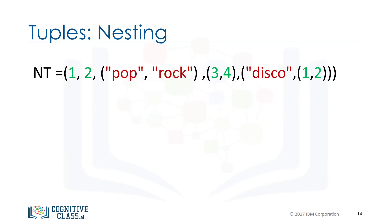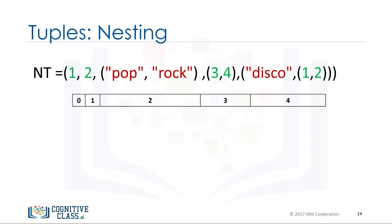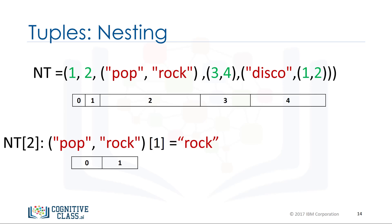A tuple can contain other tuples as well as other complex data types — this is called nesting. We can access these elements using the standard indexing methods. If we select an index with a tuple, the same index convention applies, and we can then access values in the tuple. For example, we could access the second element, and we can apply this indexing directly to the tuple variable 'nt'.